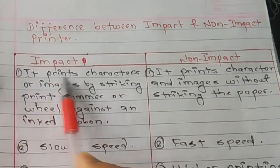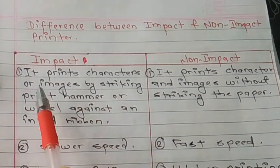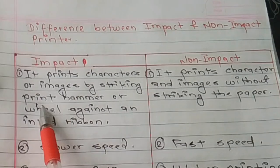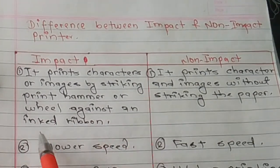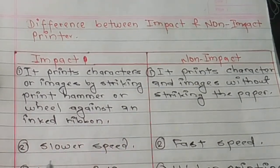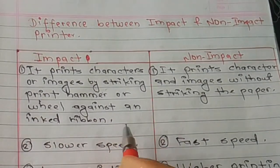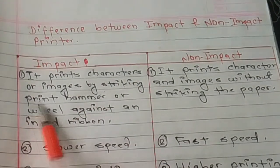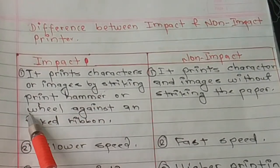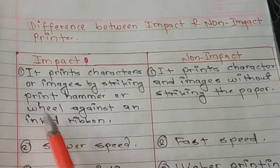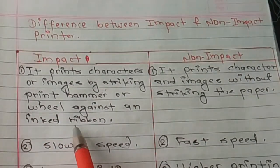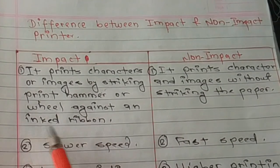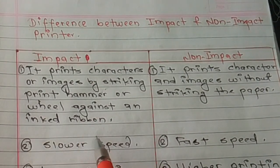An impact printer creates a character or image by striking a print hammer or wheel against a ribbon. You need to use a print hammer, a strike, and paper.